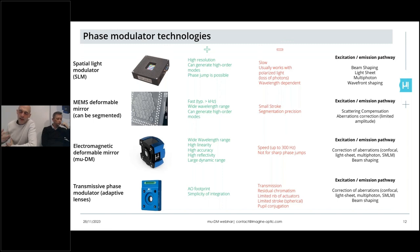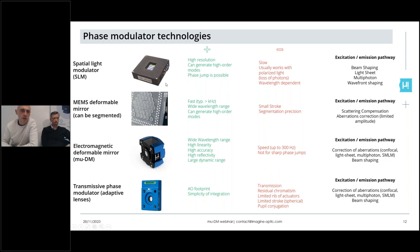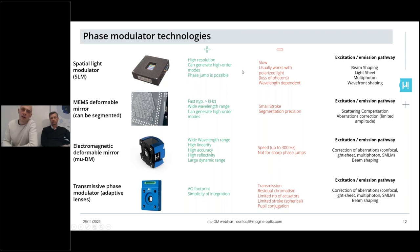Now let's move to wavefront modulation. There are four main phase modulation technologies used in multiple application fields. First, spatial light modulators based on liquid crystals are interesting because they have a lot of pixels and can generate really high-order wavefront modes and phase jumps, but most are pretty slow and have constraints in terms of polarization, and the shape generated can be wavelength-dependent.